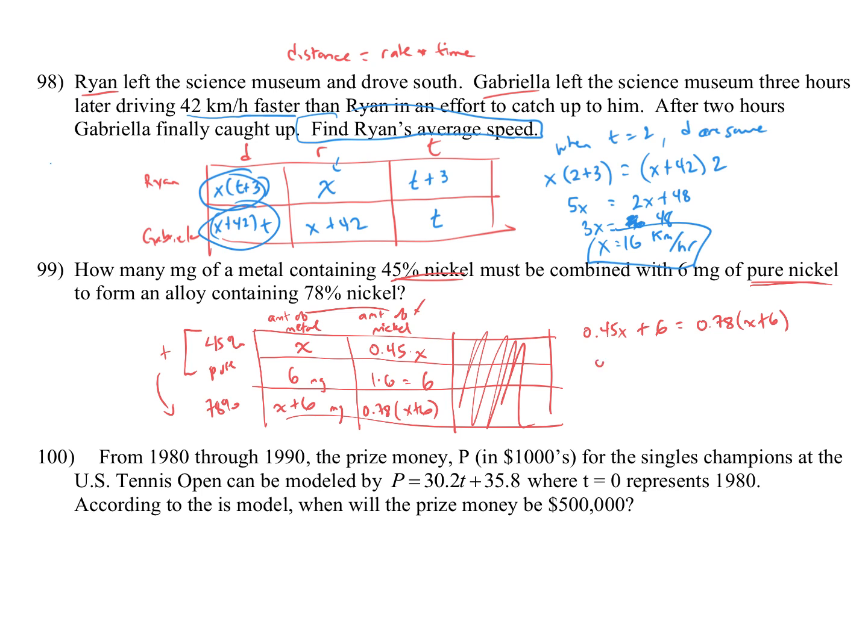And then I'm going to solve it by distributing. Let's see, I don't have my calculator on, so I'll just do this by hand. Then I would go ahead and solve this out, subtracting 4.68 from both sides, subtracting 0.45x from both sides. And when I divide both sides by 0.33, I'm going to get that x is 4. So I would need 4 milligrams of 45% nickel.